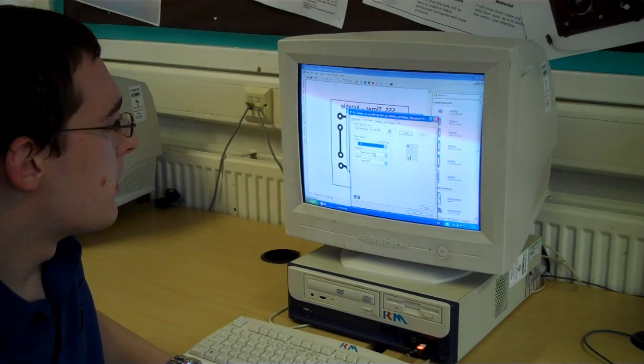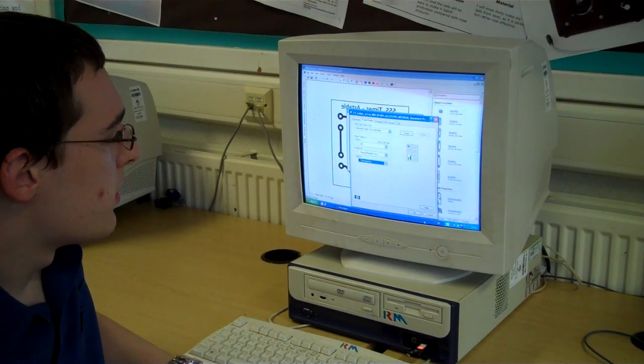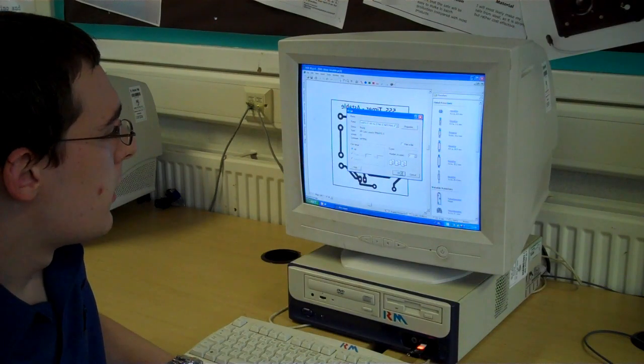I'm going to select A4, manual feed tray 1, and we're using transparency. Click OK, OK.